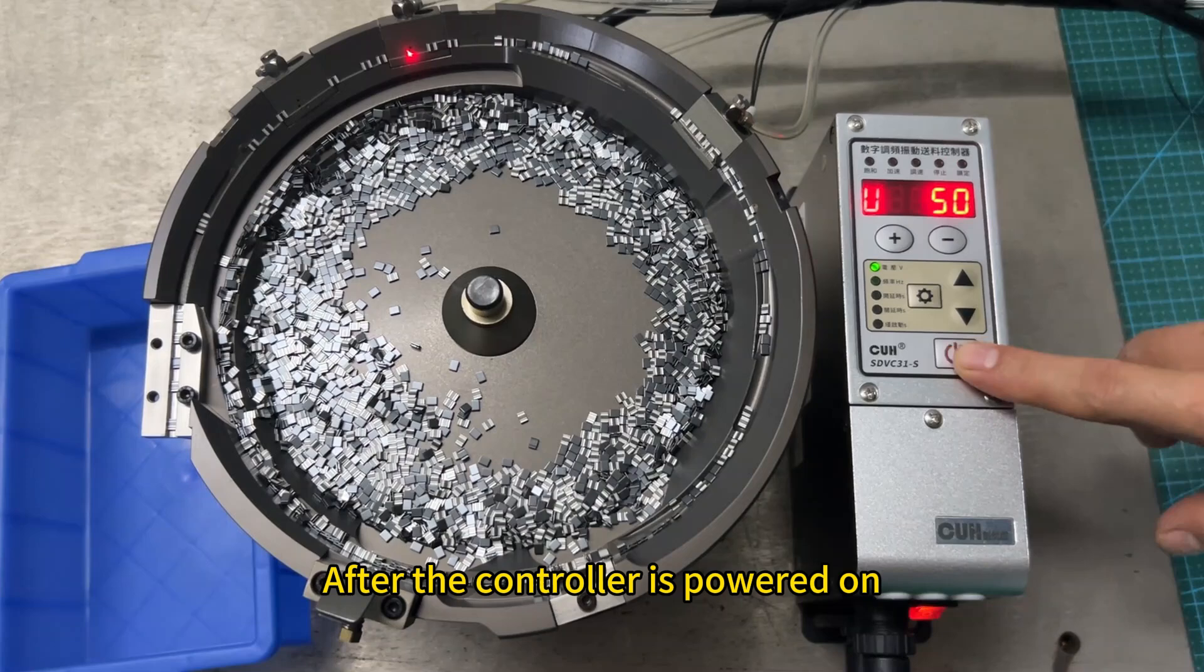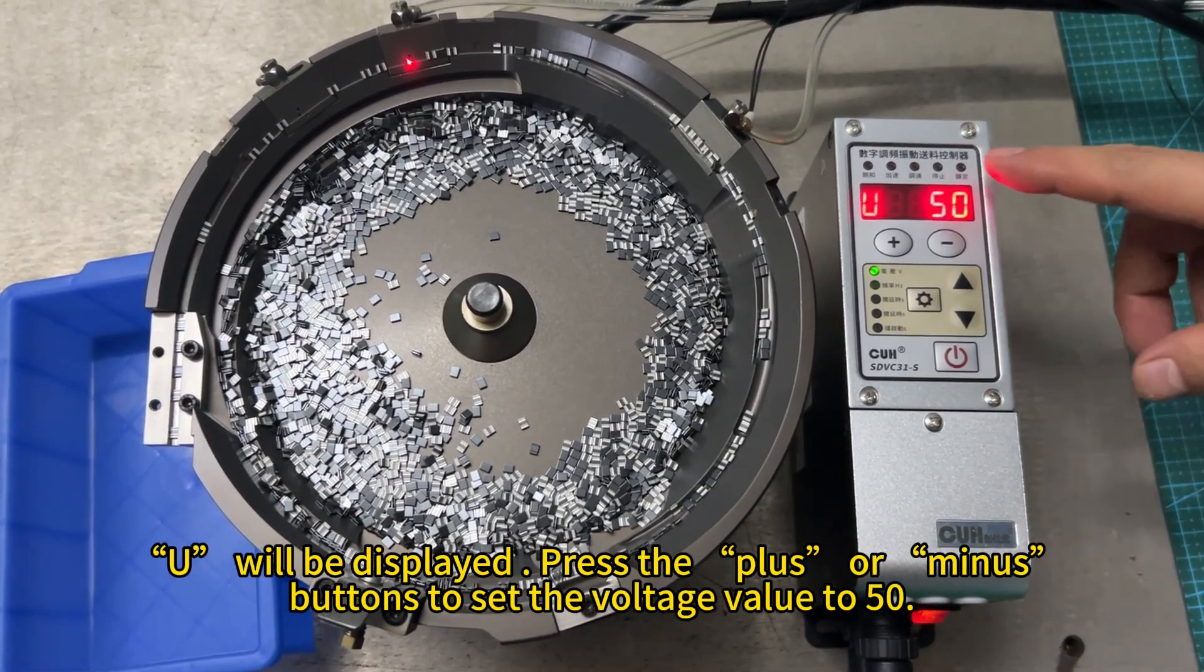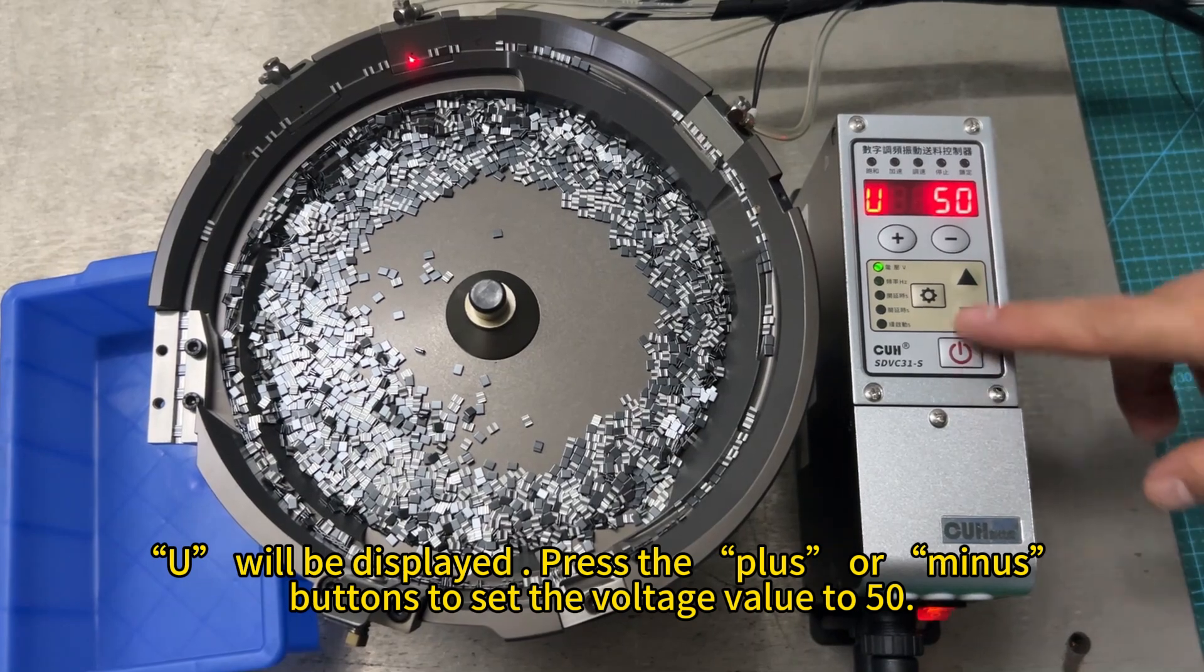After the controller is powered on, the display will activate. Press the plus or minus buttons to set the voltage value to 50.